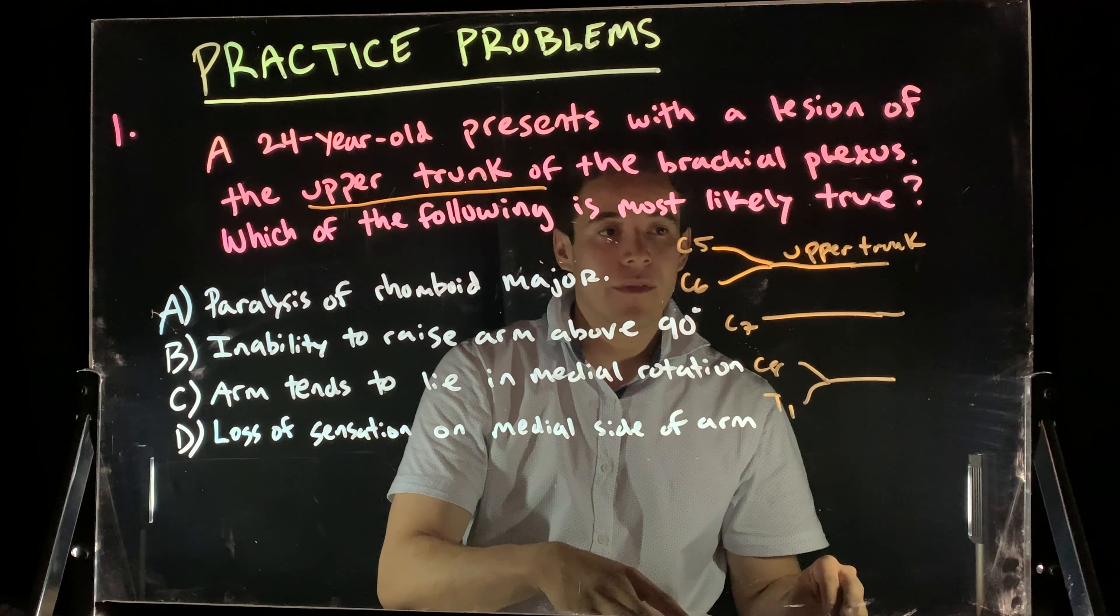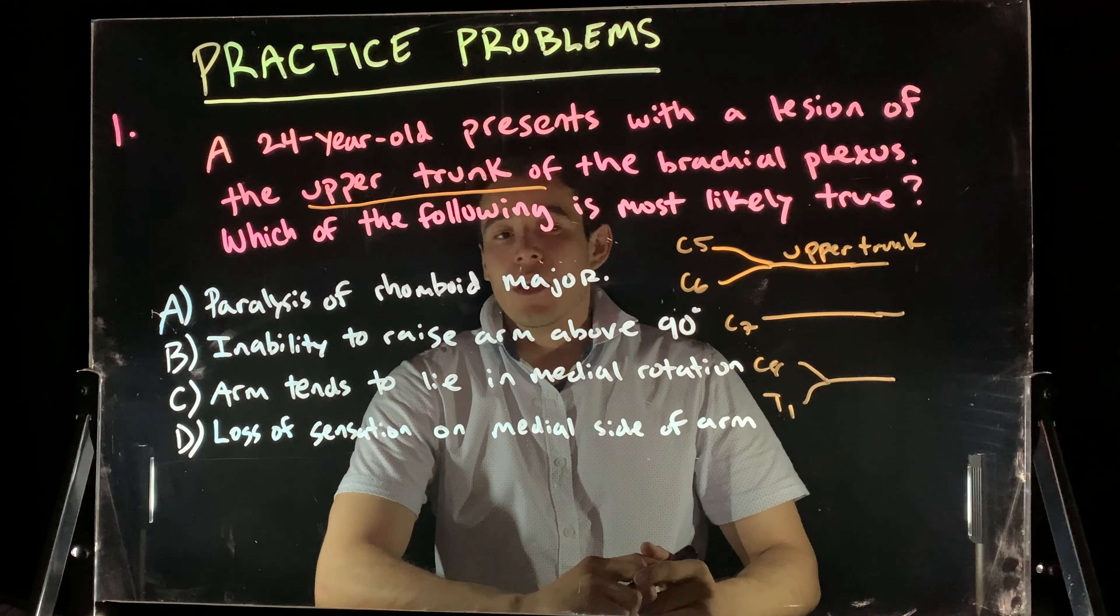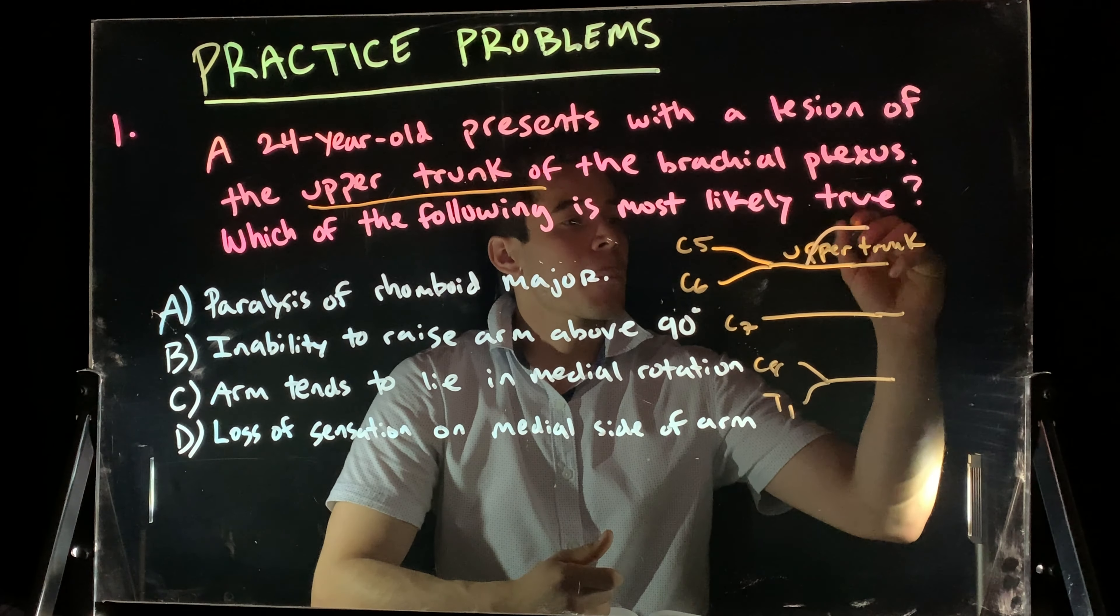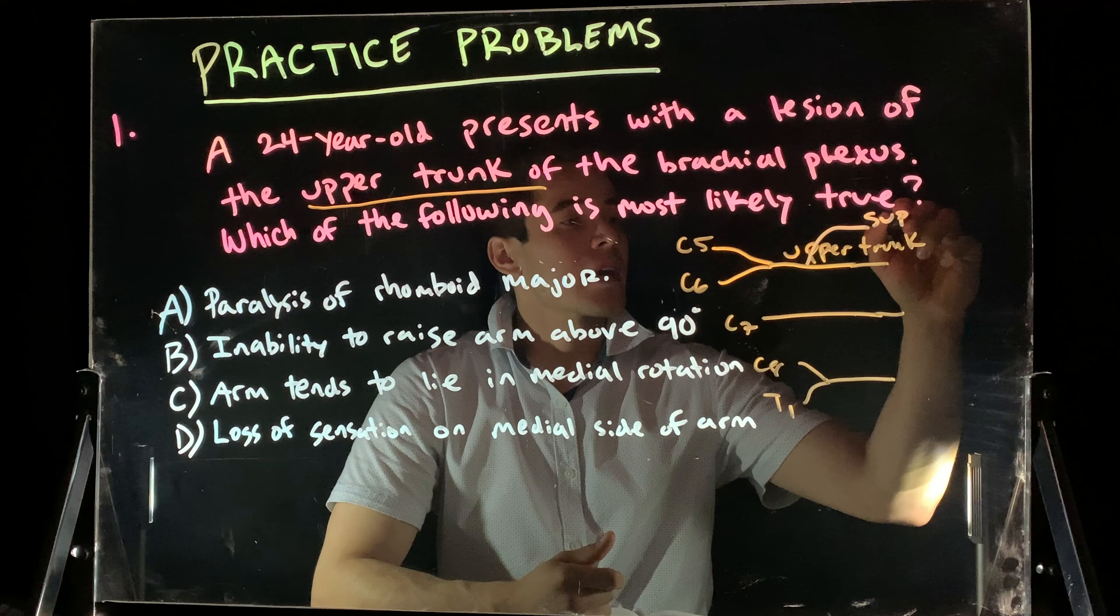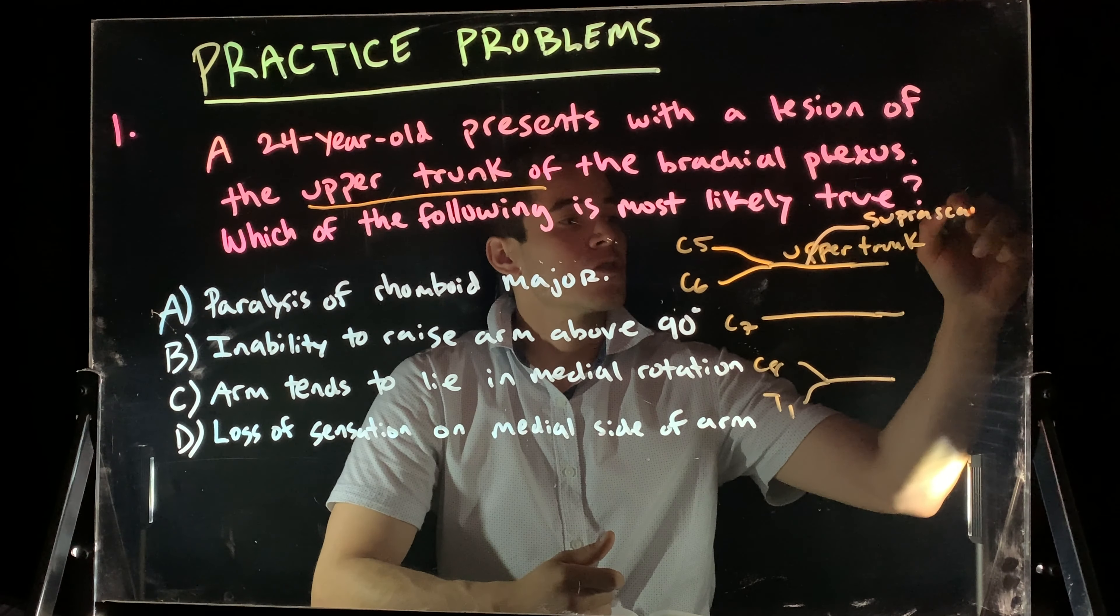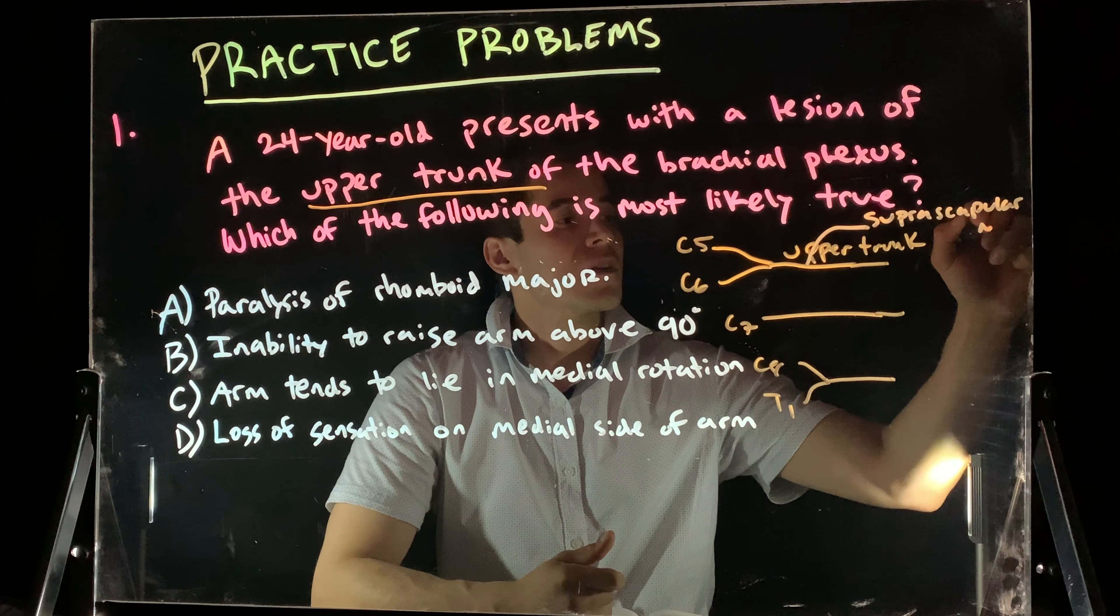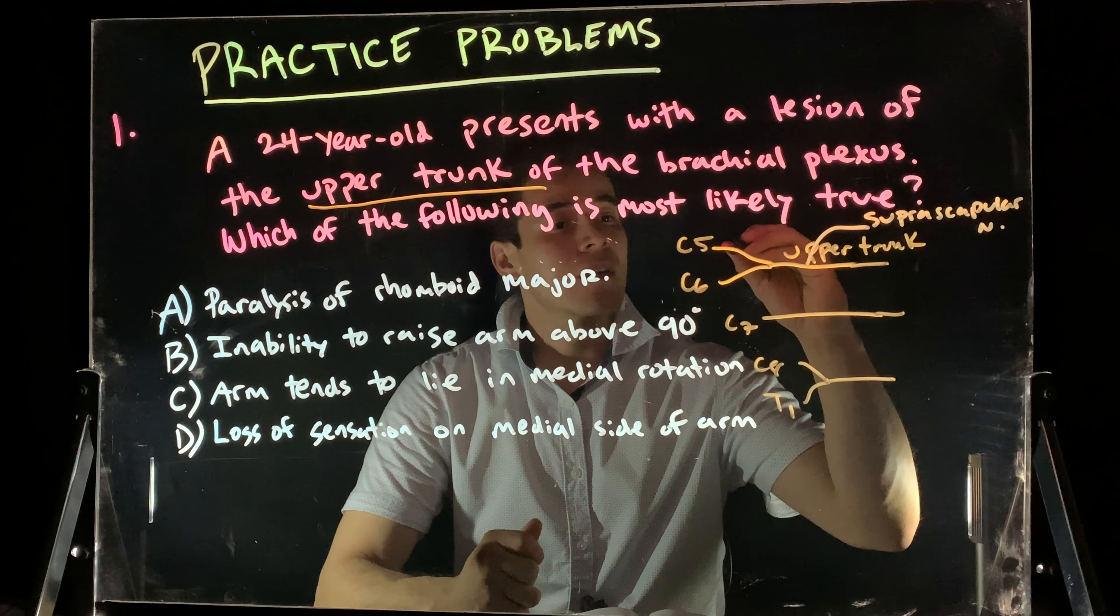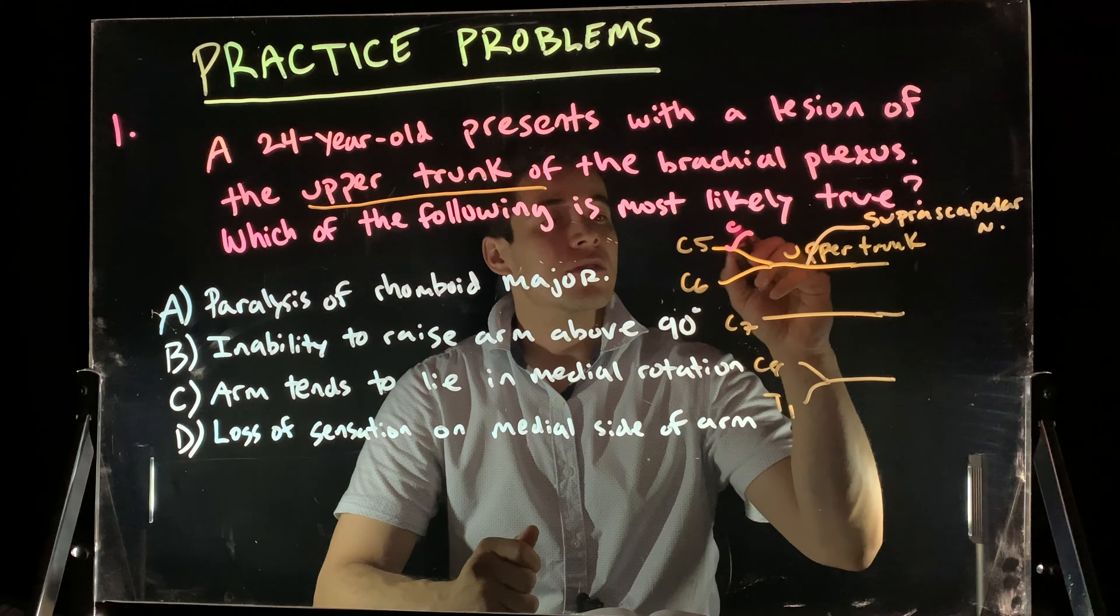What do we know that comes off the upper trunk? Well, coming directly off my upper trunk here, I actually have my suprascapular nerve. Coming off of C5, we have dorsal scapular nerve.